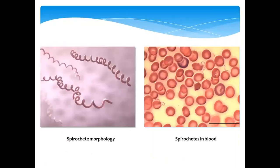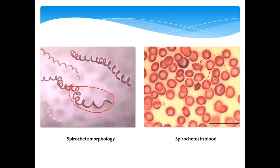Spirochetes have this characteristic spiral-shaped morphology. When a blood test is done, microscopy of the blood can reveal these spirochetes. You can see in the image some spirochetes alongside regular blood cells — that is how they appear microscopically.